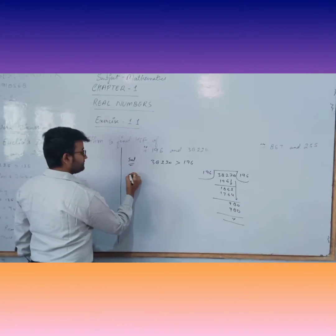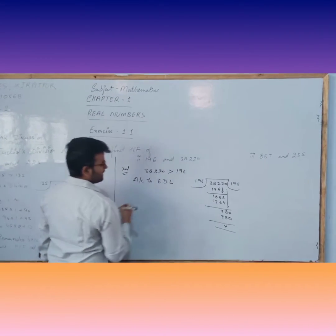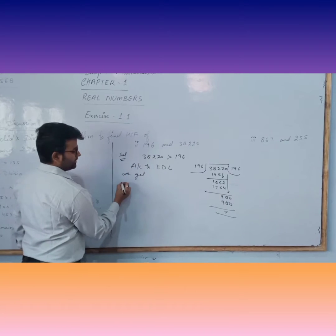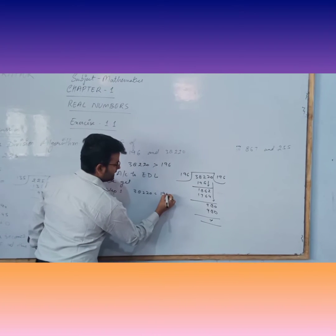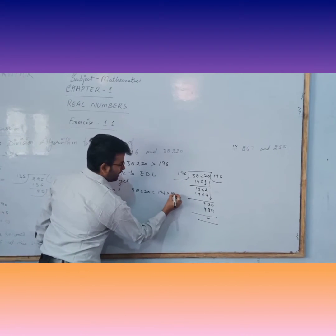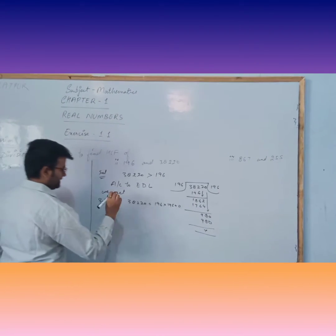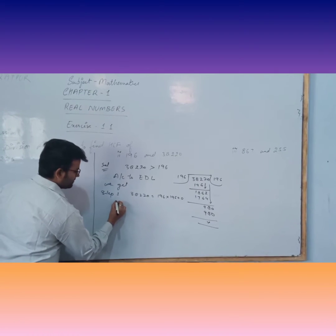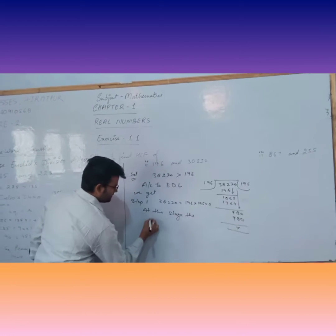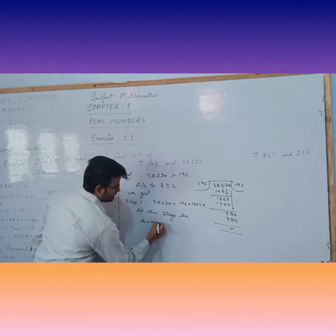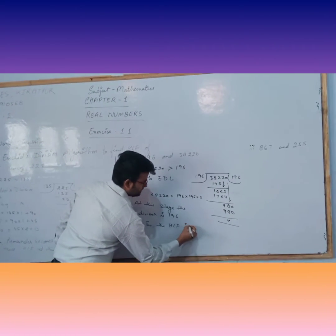So according to Euclid's division lemma we get, in step 1, this is the dividend 867, divisor 255, quotient and remainder. In step 2, dividend is 255, divisor is 195, quotient and remainder. In step 3, remainder becomes 0. At this stage, the divisor is 196, so the HCF is 196.